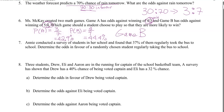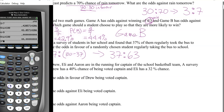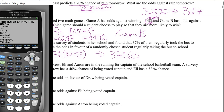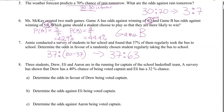Annie conducted a survey of students at her school and found that 37% of them regularly took the bus to school. Determine the odds in favor of a randomly chosen student regularly taking the bus. In favor: 37. Total is 100, so unfavorable is 100 minus 37 equals 63. The odds in favor are 37 to 63, and checking via calculator as a fraction confirms that 37 to 63 is already in lowest terms.